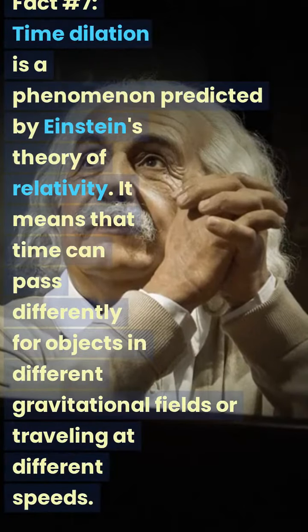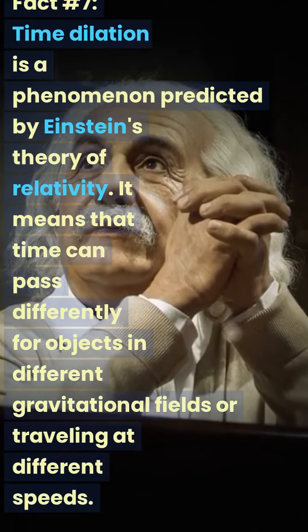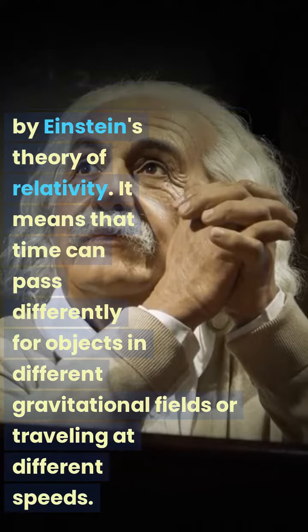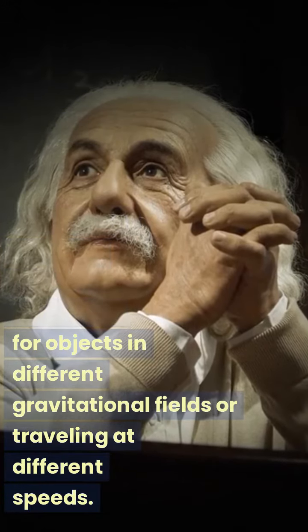Fact number seven, time dilation is a phenomenon predicted by Einstein's theory of relativity. It means that time can pass differently for objects in different gravitational fields or traveling at different speeds.